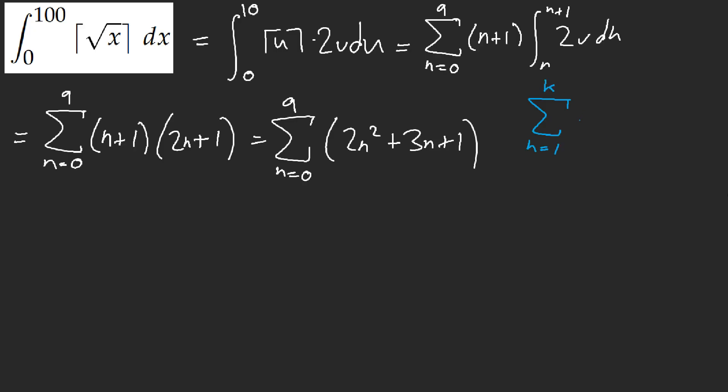When it's n squared, it's k times k plus 1 times 2k plus 1 over 6. So with that formula, it's just what,